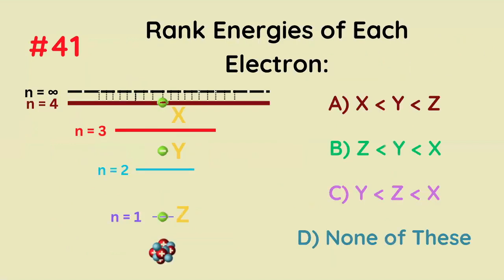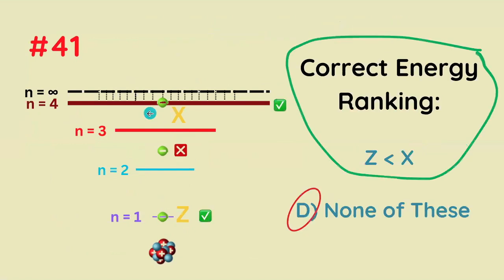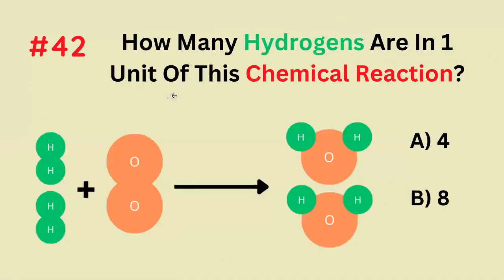Rank the energies of each of the electrons. This is a trick question, because there's not going to be an electron right here since it's not occupying a shell. So Z is going to have less energy than X.